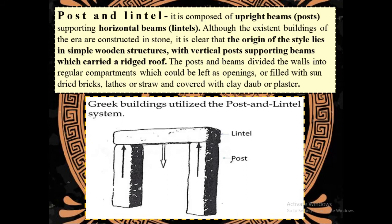Post and lintel construction is composed of upright beams, or posts, supporting horizontal beams. It is clear that the origin of the style lies in simple wooden structures, with vertical posts supporting beams which carried a rigid roof. The posts and beams divided the walls into regular compartments which could be left as openings or filled with sun-dried bricks, laths, or straw and covered with clay or plaster.